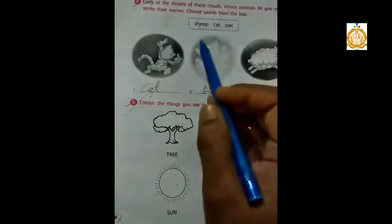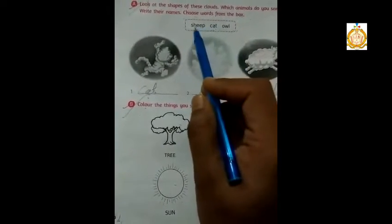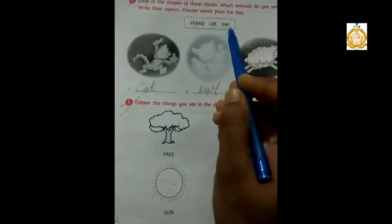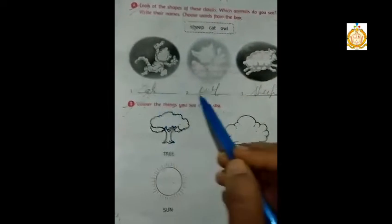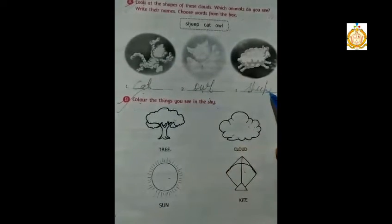There are some words: sheep, cat, and owl. First one is cat. Second one is owl. Third one is sheep.